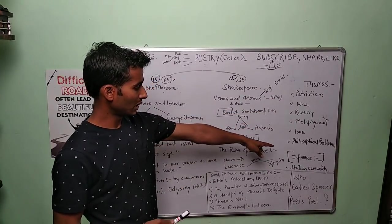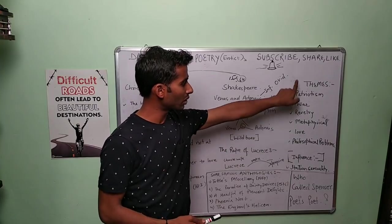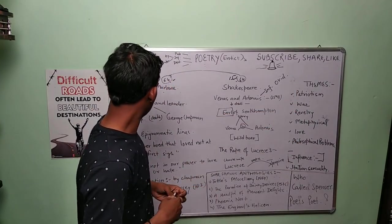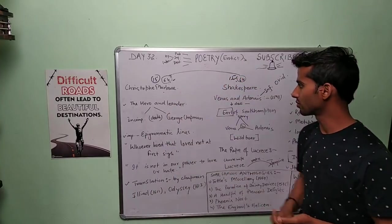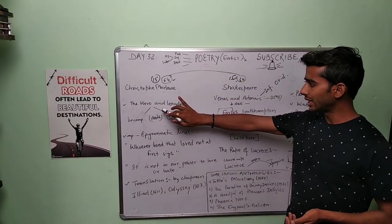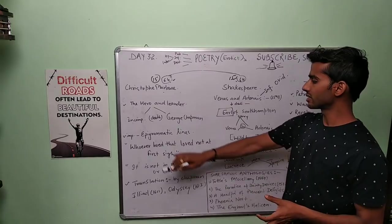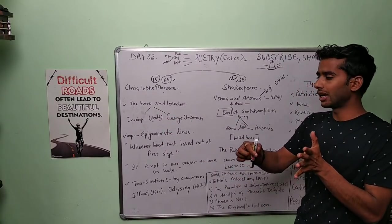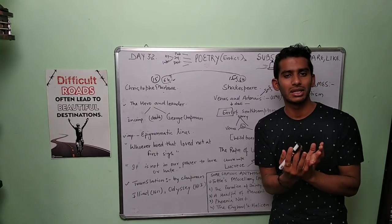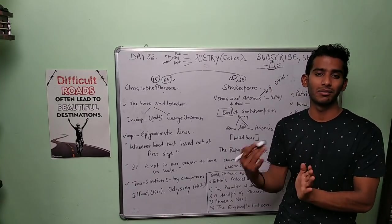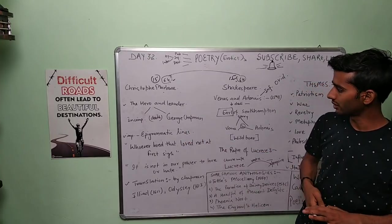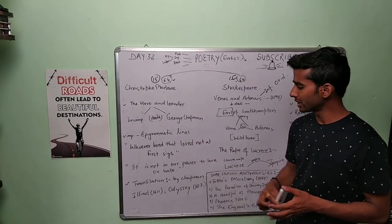You need to work on themes and social influence. Let's talk about Christopher Marlowe. Here, Hero and Leander—his work. It is an incomplete work, and it was incomplete because of his untimely death, and it got completed by this gentleman, George Chapman.